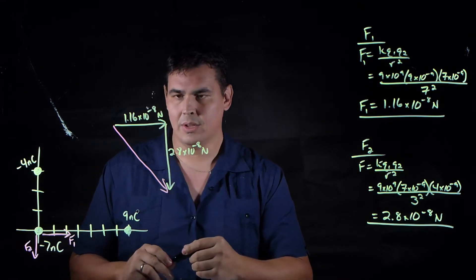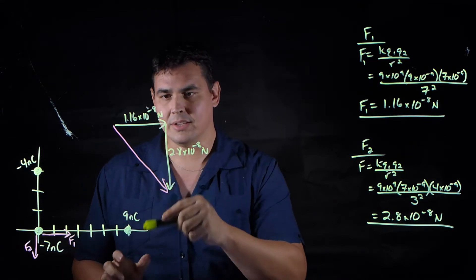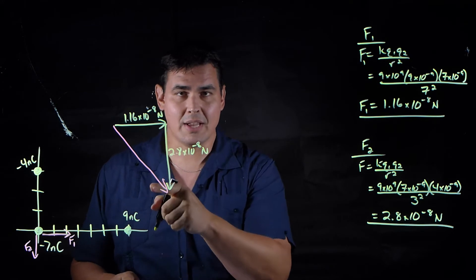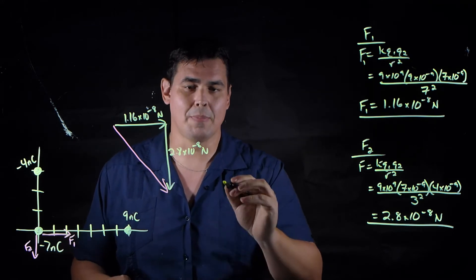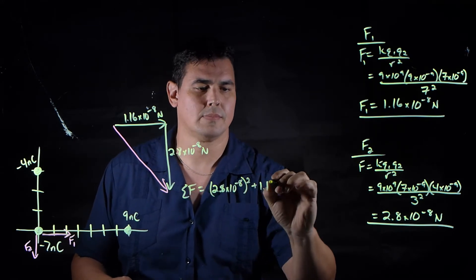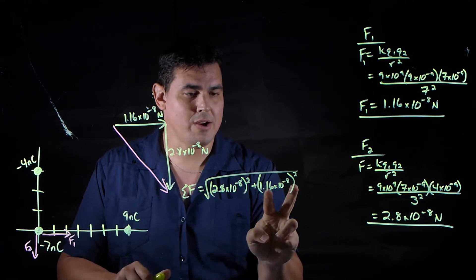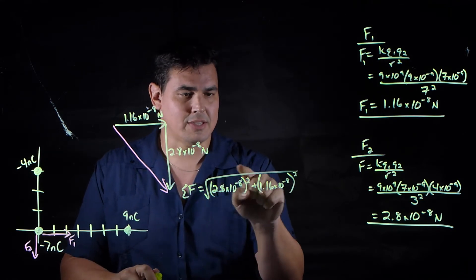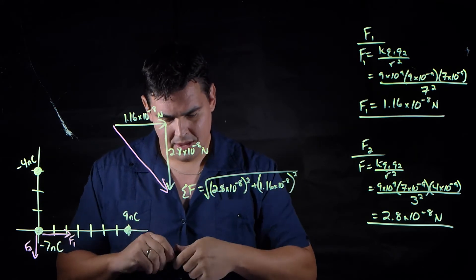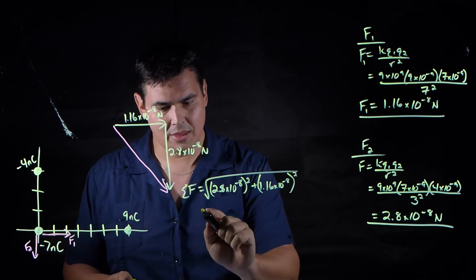So let's go ahead and figure out how much that is. Well, if I know the two sides, I can use the Pythagorean theorem. If I add the squares of my two sides and take the square root of that whole thing, I end up with that equals 3.029 times 10 to the minus 8 newtons.